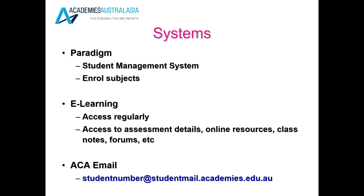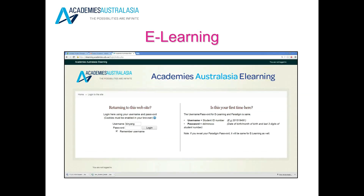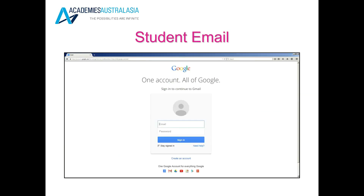This is the Paradigm access page — you will need your email and your password. With your email you'll also be able to log into your e-learning page, which is where you'll find all of your classwork and assessment work. This is also how you'll be able to log into your Academies Australasia email through Google.